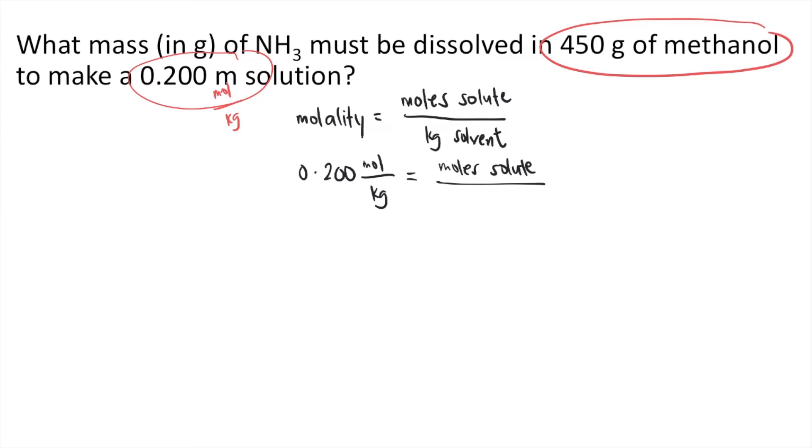Methanol is our solvent. First thing you need to do is convert the grams into kilograms before we can plug it into the equation. So 450 grams, we know that in 1 kilogram there are 1,000 grams. So 450 grams is equal to 0.450 kilograms. You plug in that value, 0.450 kilograms.